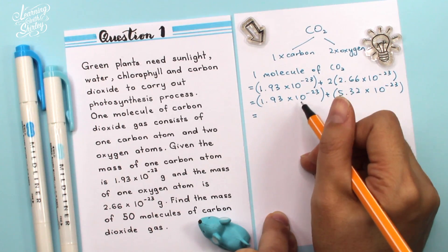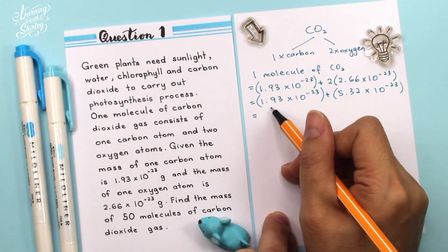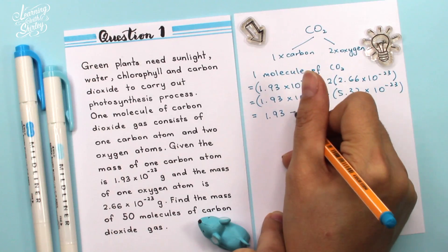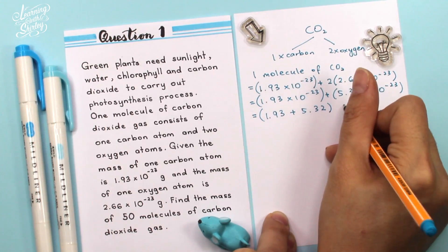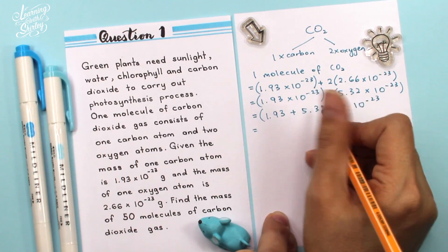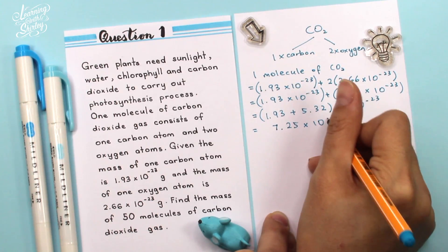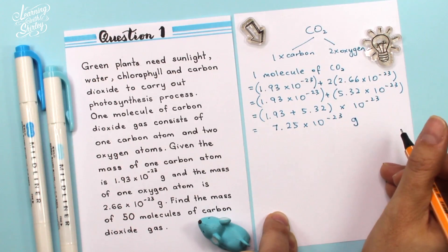Because for these two terms, they have the same 10 to the power of negative 23. So therefore, I can add up 1.93 plus with 5.32. So 1.93 plus with 5.32 times 10 to the power of negative 23. So when I add these two together, I will get 7.25 times 10 to the power of negative 23. And the unit is in grams.